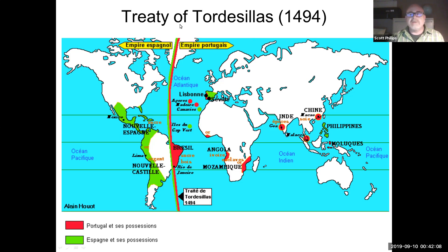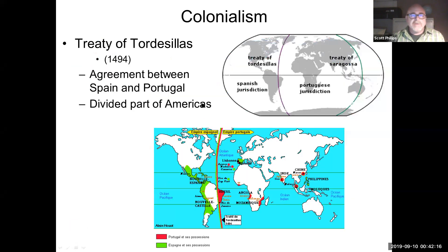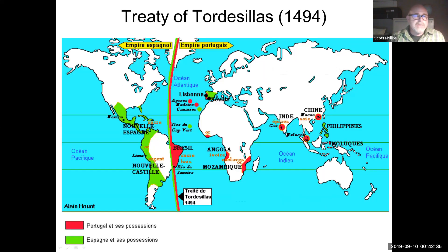I'd like you to know what two countries that involved. It involved the two countries of Portugal and Spain. The Treaty of Tordesillas is an agreement between Portugal and Spain, and it divided up most of the world, including the Americas. And for us, we're interested in the Americas. So if you see this sort of red thing there, let's go back just a moment and get a larger view of that.